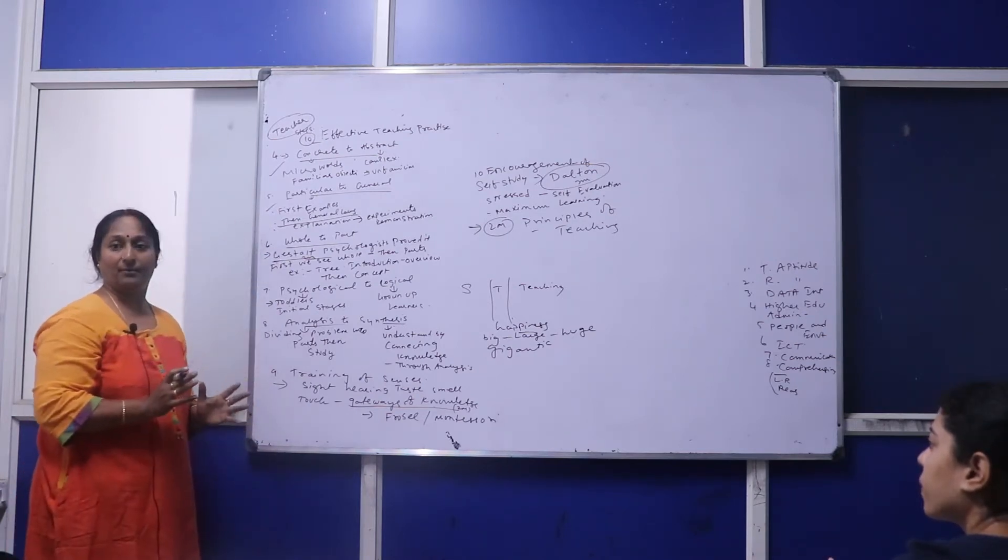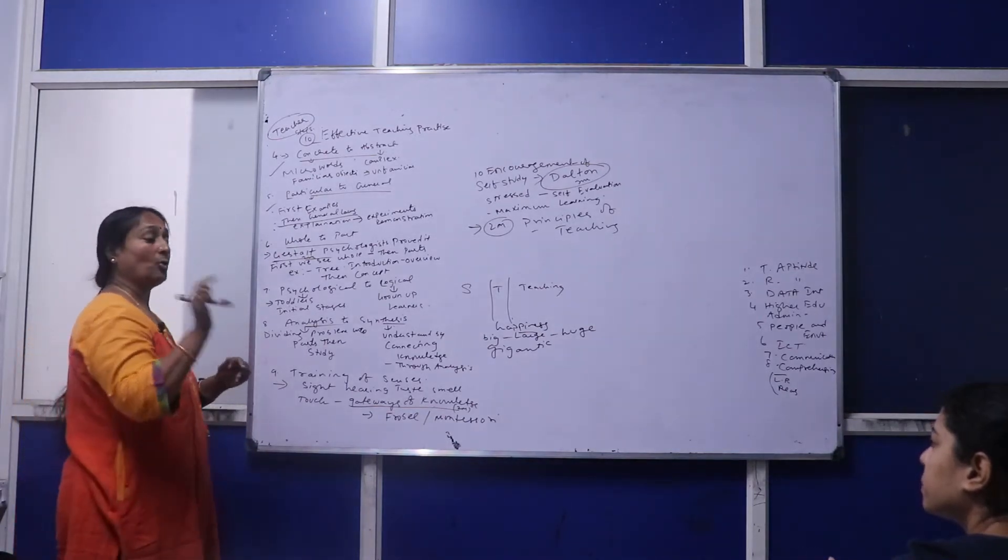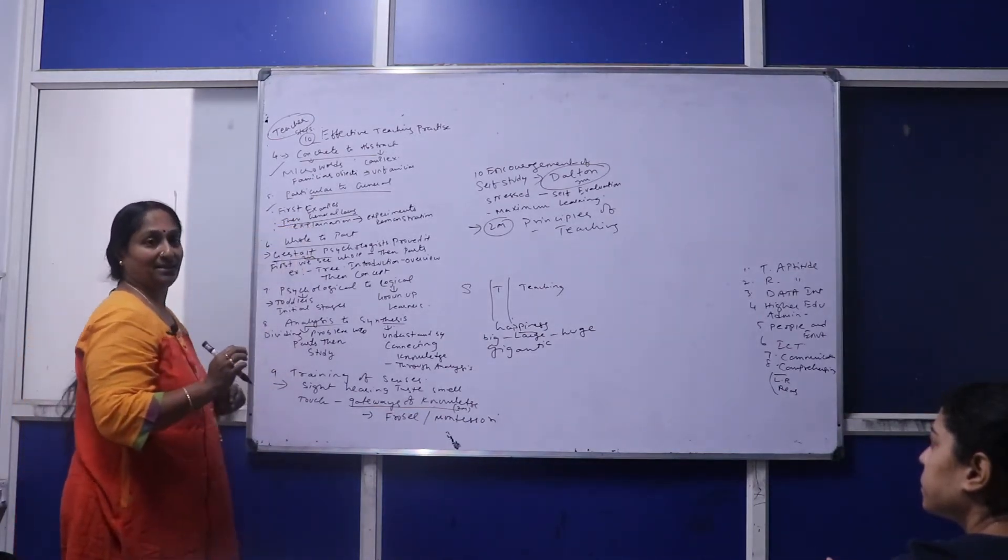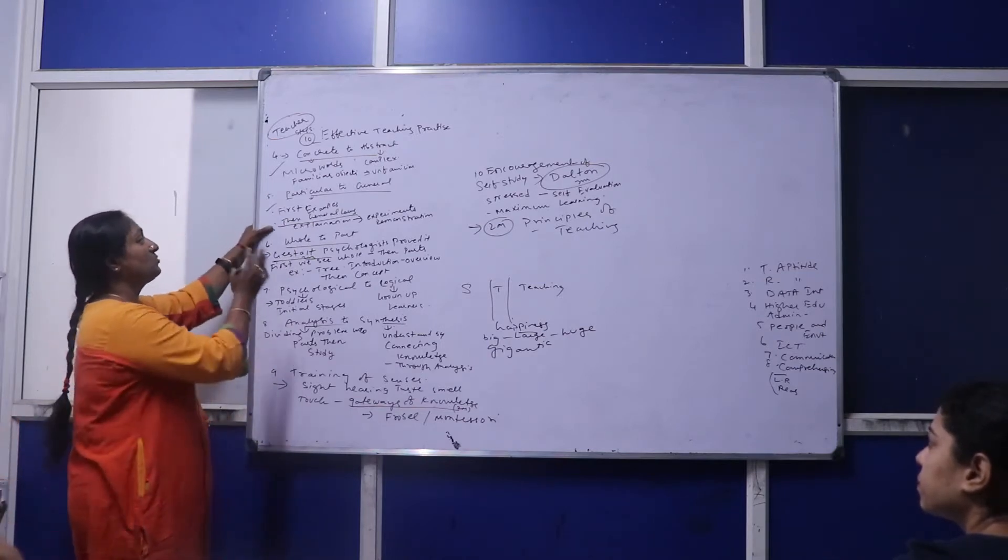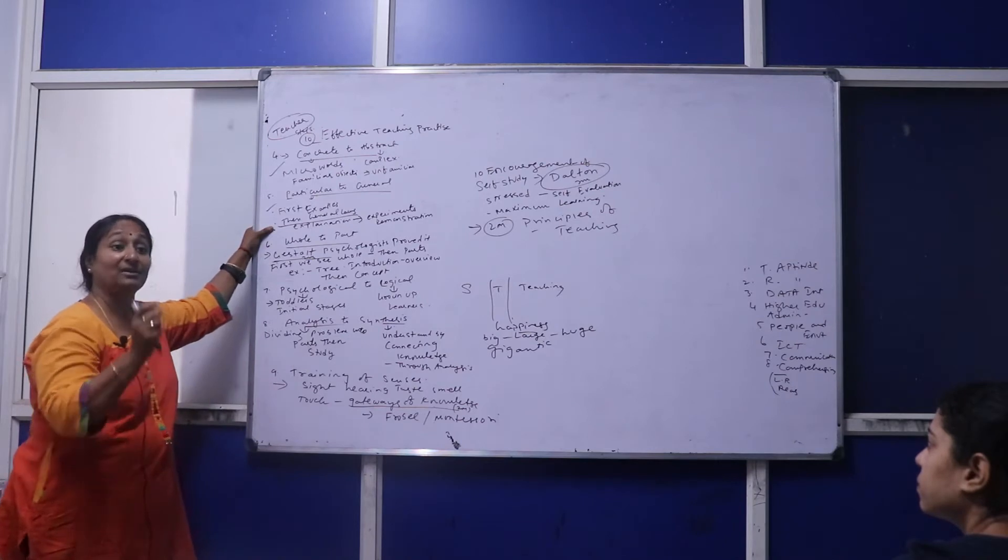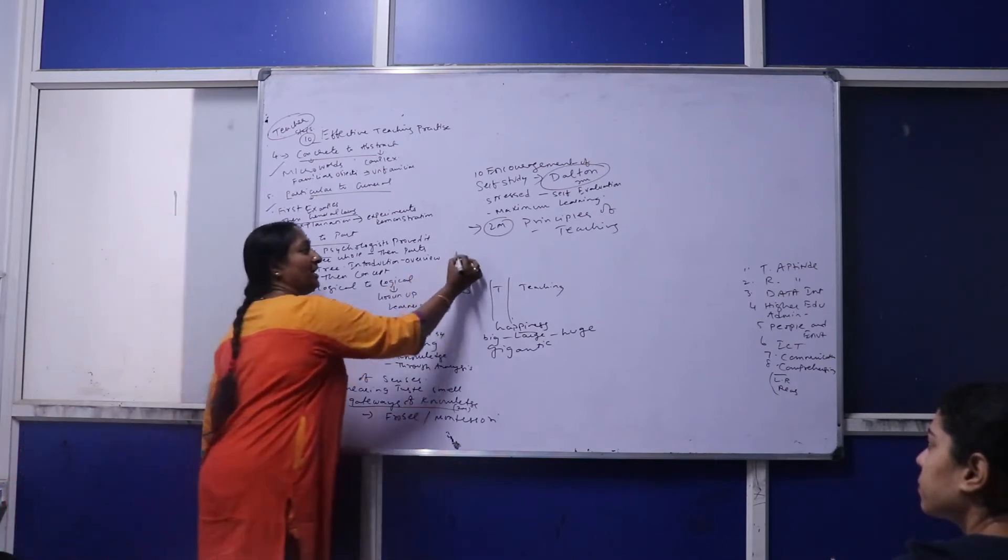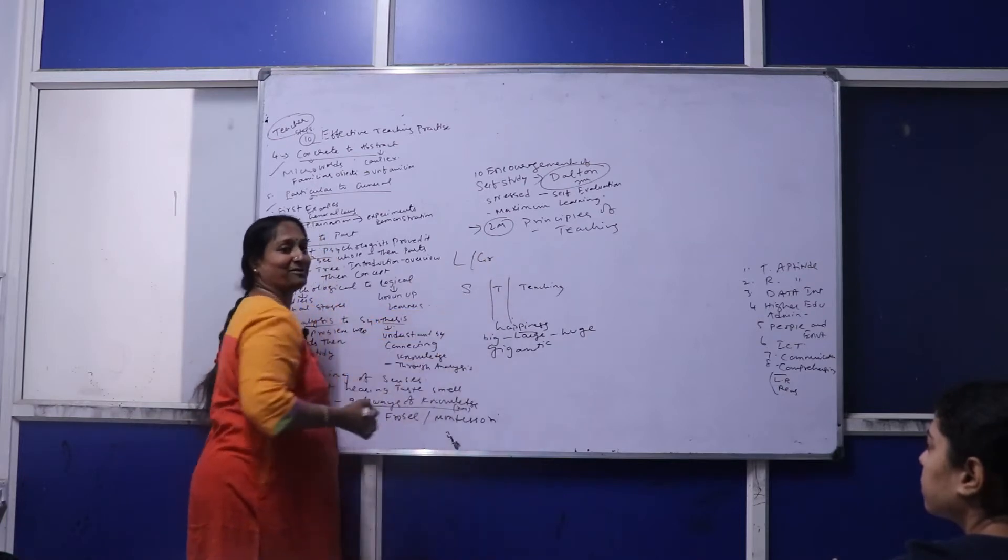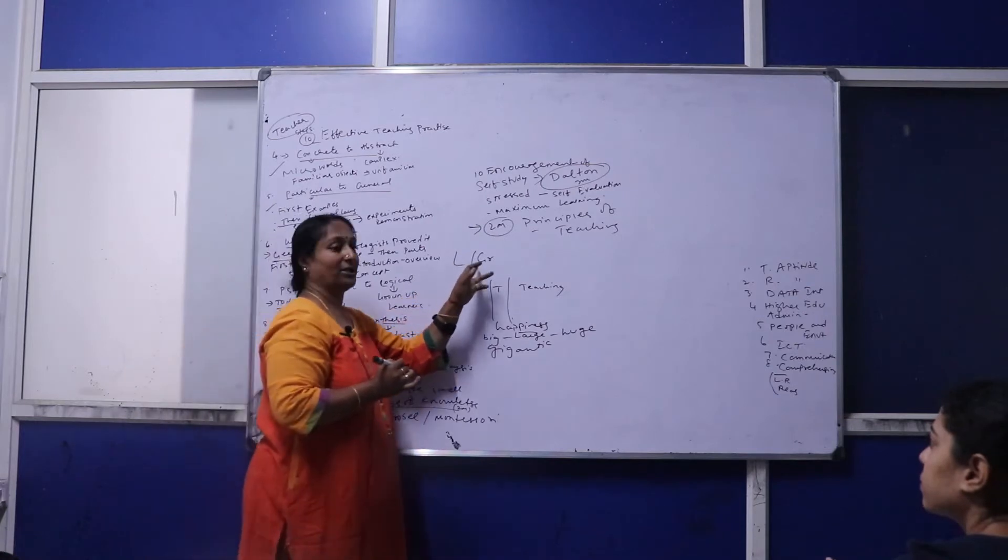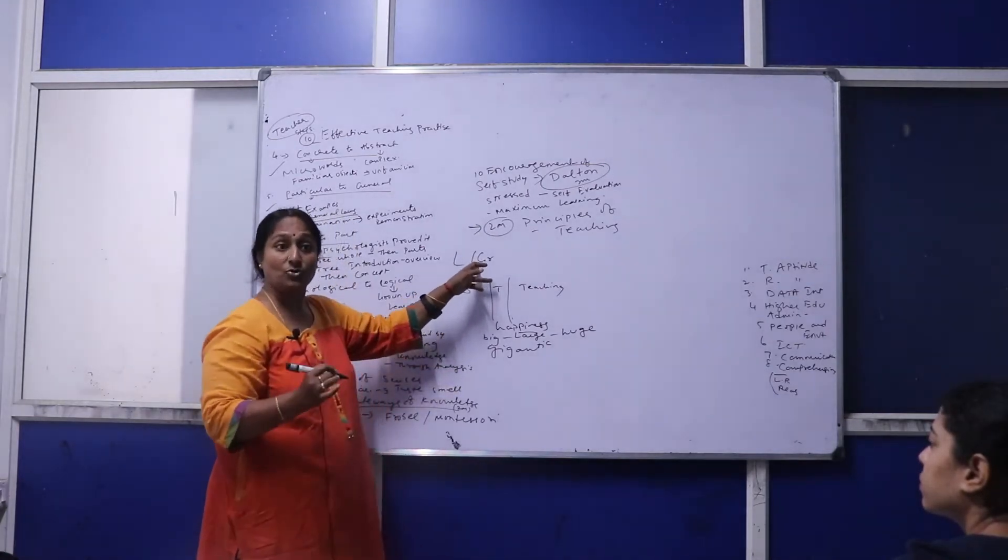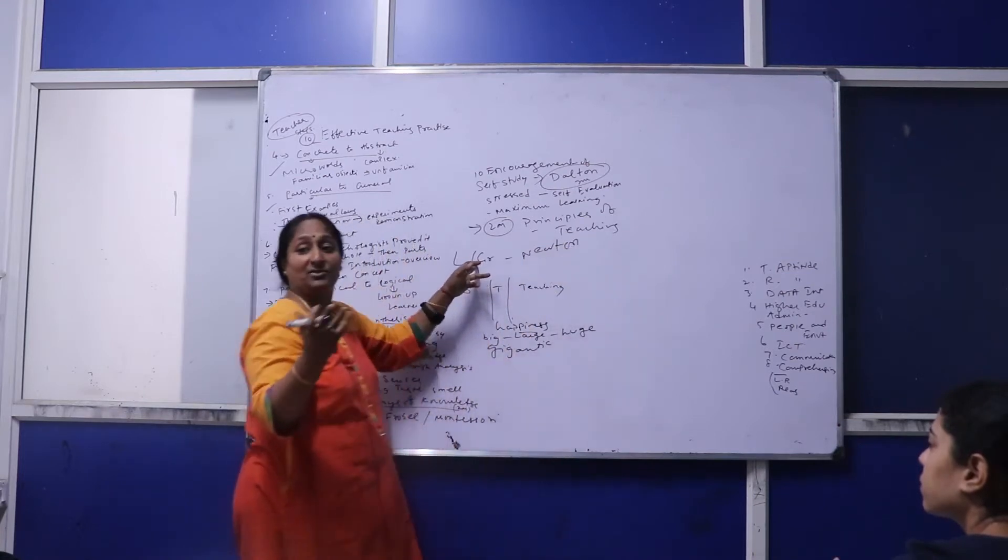Next, the teacher should always go from particular to general. You cannot generalize anything. For students to understand what your criteria is, first give them lots of examples. Show them what the topic is, what laws are related. For example, when teaching laws of gravitation, first instead of telling who Newton is and his three laws...